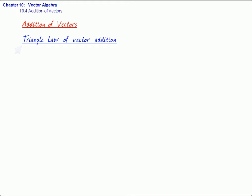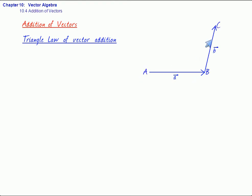What is the combined effect of two vector quantities when they are added? If two or more forces are applied at a particular point, will the magnitude of their vector sum be the same as the sum of their separate magnitudes, or will it be different? Now, triangle law of vector addition: if two vectors, say vector A and vector B, are denoted by two sides of a triangle, say AB and BC.